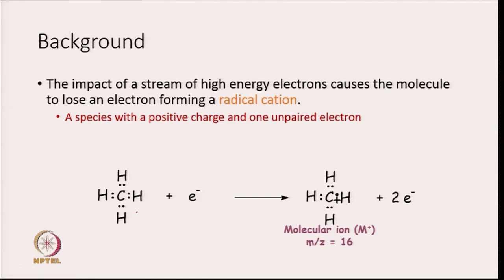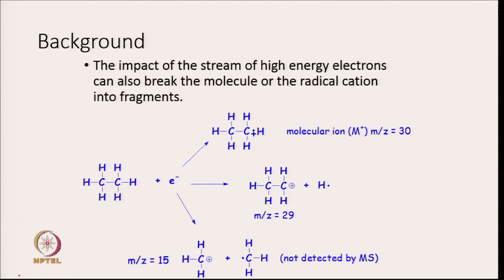A radical cation is a species with a positive charge and one unpaired electron. For example, when the CH4 molecule is bombarded with electrons, this electron takes out one more electron and generates a radical cation whose molecular weight is 16, so the m/z ratio is 16 and you get a peak at 16 corresponding to this radical cation.